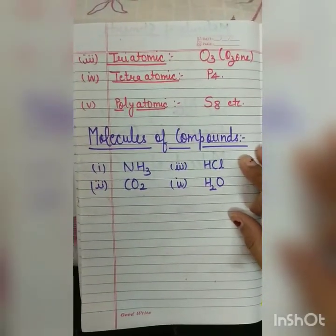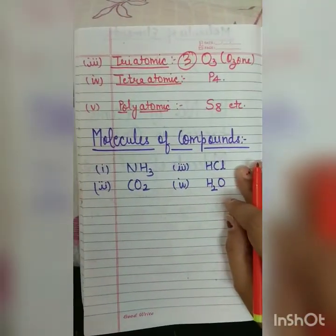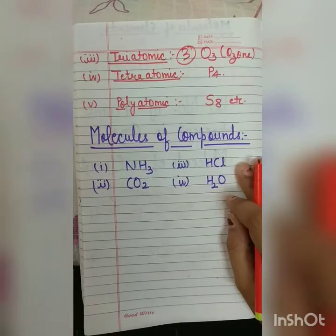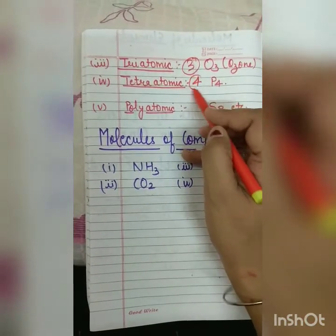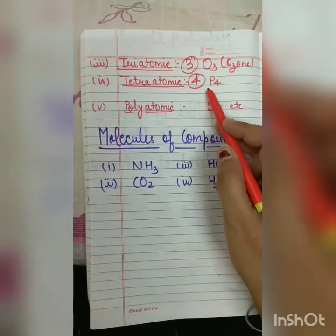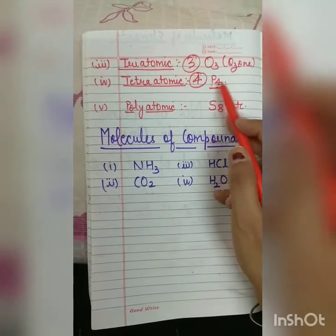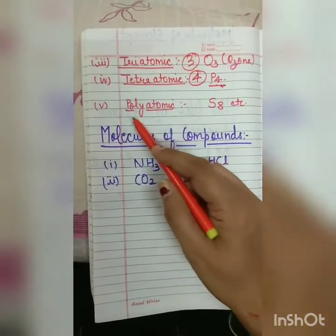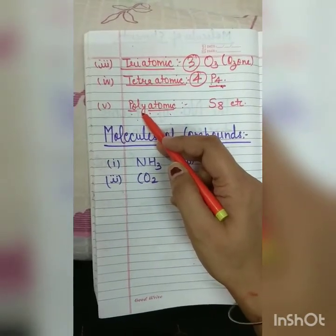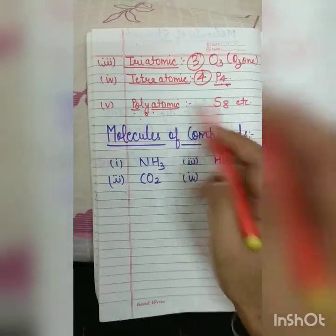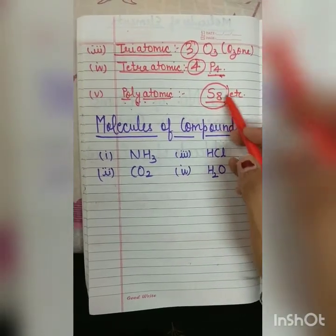The next we are having triatomic — tri means three atoms. For example, ozone. In ozone, three atoms of oxygen combine together to form one molecule of ozone. Tetra means four — it means four atoms. Here we are having the example phosphorus, which always exists as P4, in which four atoms of phosphorus chemically combine together. Then the last category we are having is polyatomic — poly means more than four atoms. It can be five, six, seven, or eight. We are having the example sulfur, which exists as S8, in which eight atoms combine together chemically.